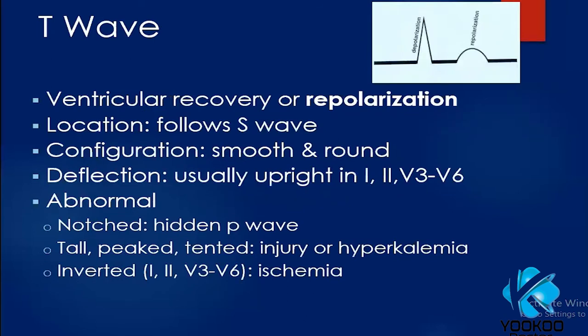The T wave represents ventricular recovery or repolarization phase, located following the S wave. It is usually smooth and round, and normally upright in leads 1, 2, V3, and V6. In cases of abnormality: a notched T wave may indicate a hidden P wave buried under the T wave; tall, peaked T waves indicate injury or hyperkalemia; inverted T waves occur in cases of ischemia.